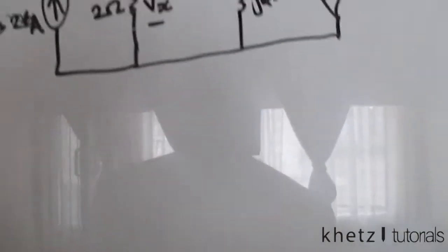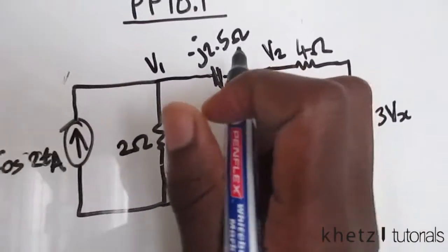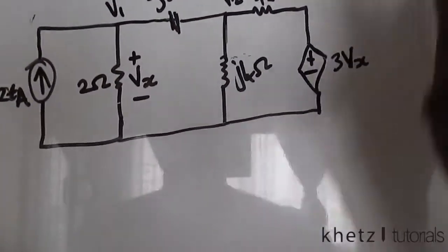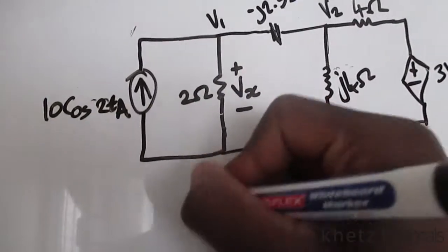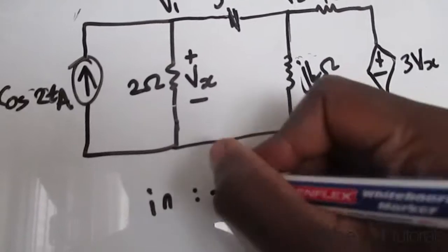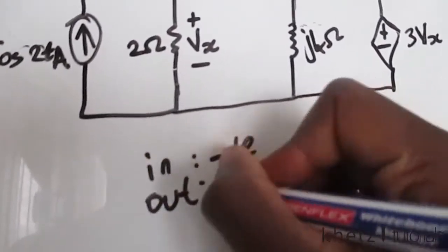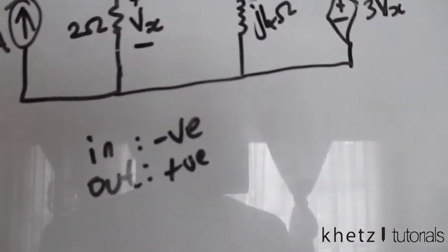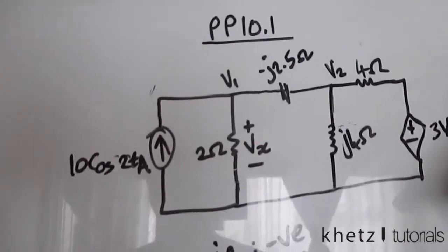We're asked to find V1 and V2 using nodal analysis. You focus on a node and check which currents are going in and out, assigning appropriate signs. Currents going in get a negative value, currents going out get a positive value, and all unlabeled currents are assumed to go out.